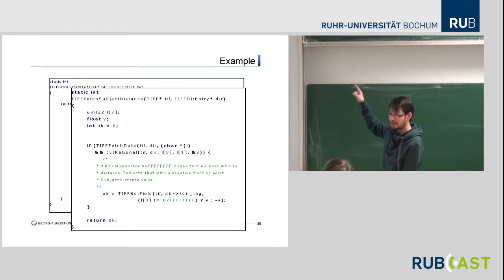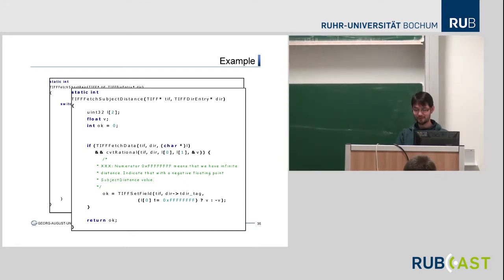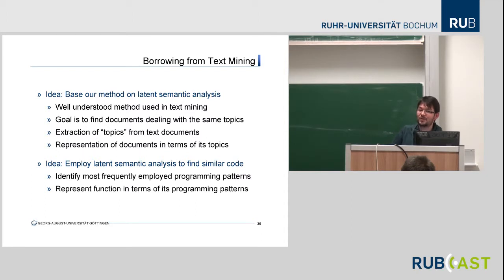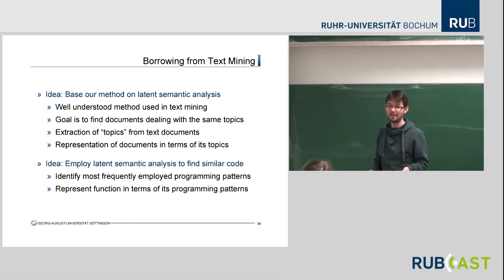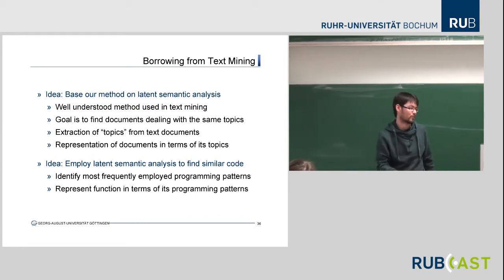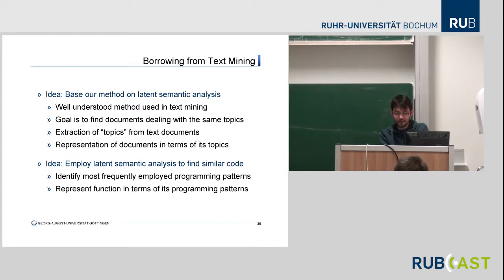So the question is: if we have the first bug, can't we automatically find the second one? It's so similar. To do this, we borrow from text mining. People in text mining had a similar problem — they have an article and want to find all articles about a similar topic, like finance or sports. They want to find topics in text documents. The method they employ is called latent semantic analysis, and we want to use this exact same method adapted to finding programming patterns.